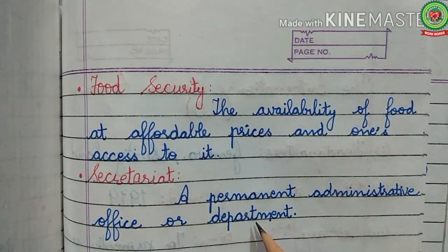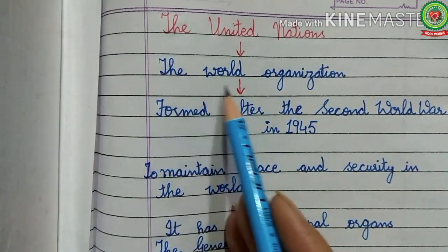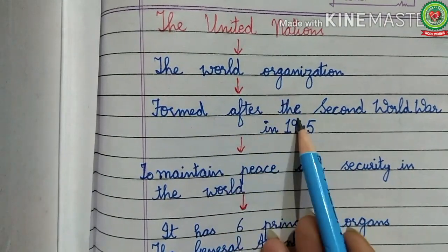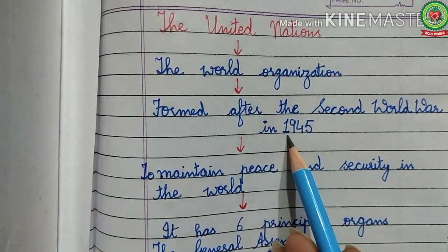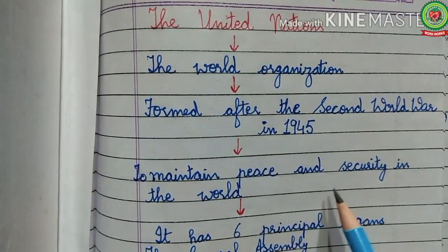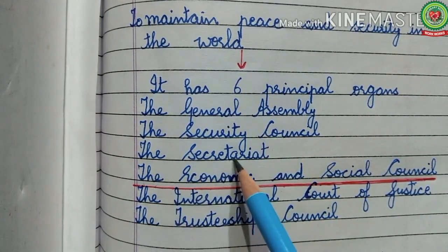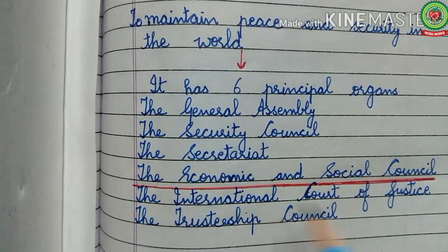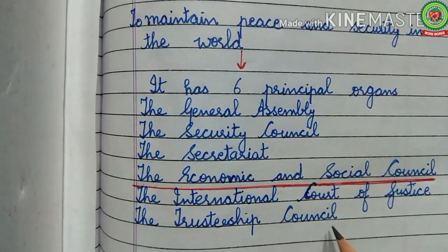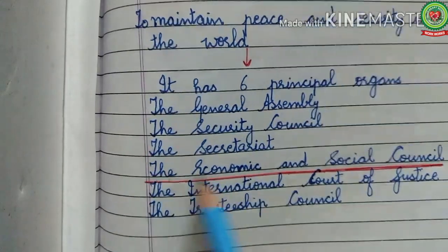'Food security' means the availability of food at affordable prices and access to it. 'Secretariat' means a permanent administrative office or department. Earlier we discussed the United Nations — it is the world organization formed after the Second World War in 1945 to maintain peace and security in the world. It has six principal organs: the General Assembly, the Security Council, the Secretariat, the Economic and Social Council, the International Court of Justice, and the Trusteeship Council.